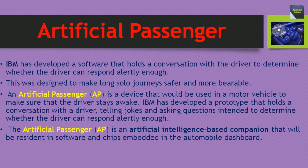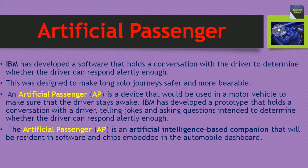IBM has developed a software that holds a conversation with the driver to determine whether the driver can respond alertly enough. This was designed to make long solo journeys safer and more bearable. An artificial passenger, also known as AP, is a device that would be used in a motor vehicle to make sure that the driver stays awake. IBM has developed a prototype that holds a conversation with a driver, telling jokes and asking questions intended to determine whether the driver can respond alertly enough. The artificial passenger is an artificial intelligence based companion that will be resident in software and chips embedded in the automobile dashboard.